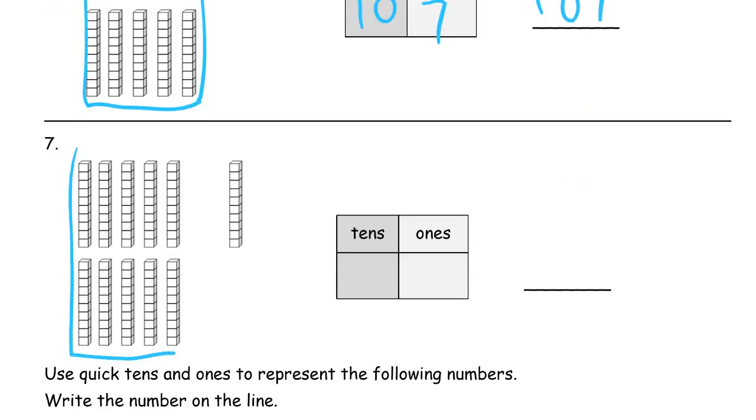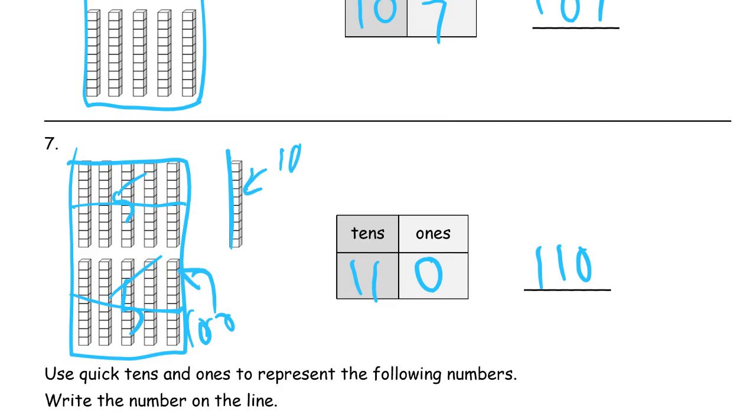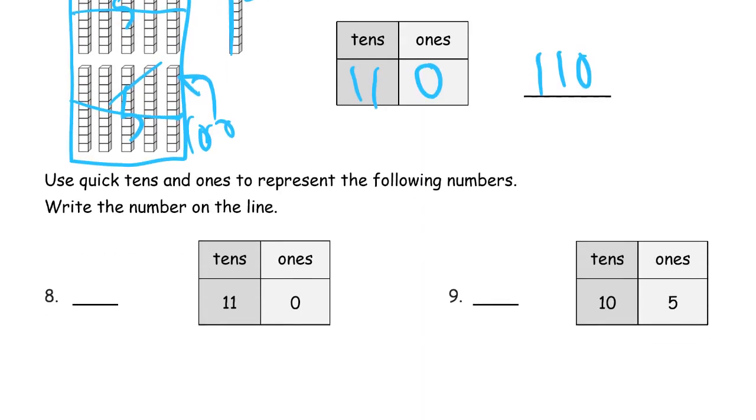And here you have 10 tens, right? Because it's two five group rows. That's five, and that's five. So that makes 10. And then there's one more 10 here, so that's 11 tens. But there's zero ones, so that's 110. There's the 100, right there. And that's 10 more. So 100 plus 10 is 110. If you're counting it, count by tens. You can do that too.